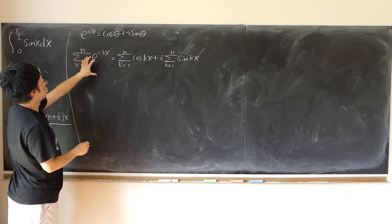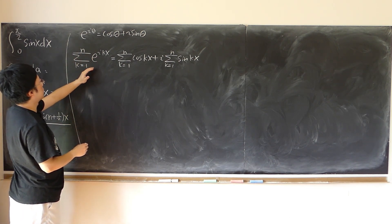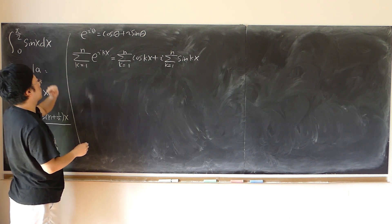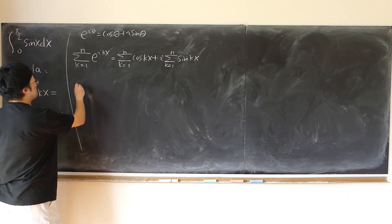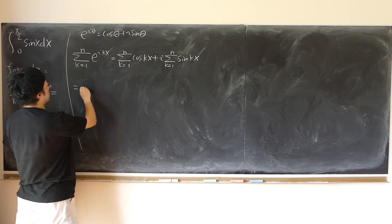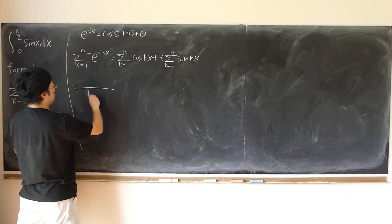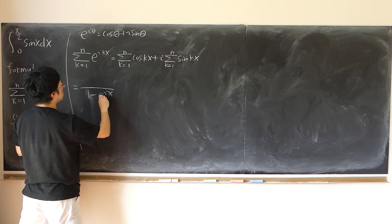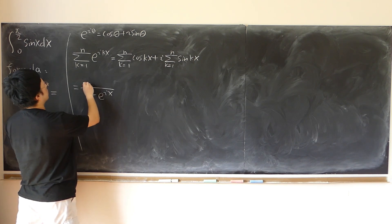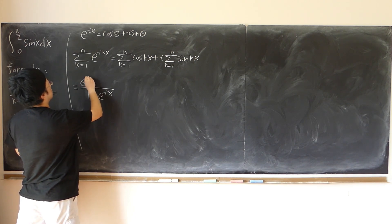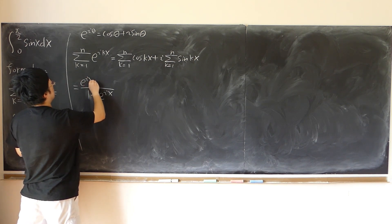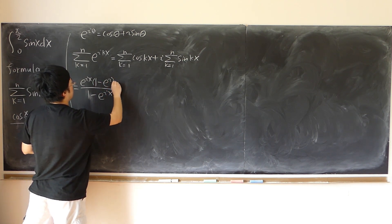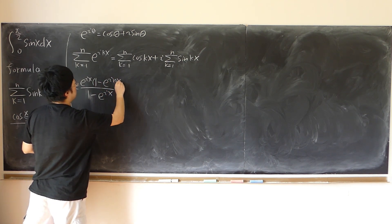This is actually a geometric series with common ratio e^{ix}. So according to the geometric series formula, the denominator is 1 minus e^{ix}, and the numerator is e^{ix} times 1 minus e^{inx}.